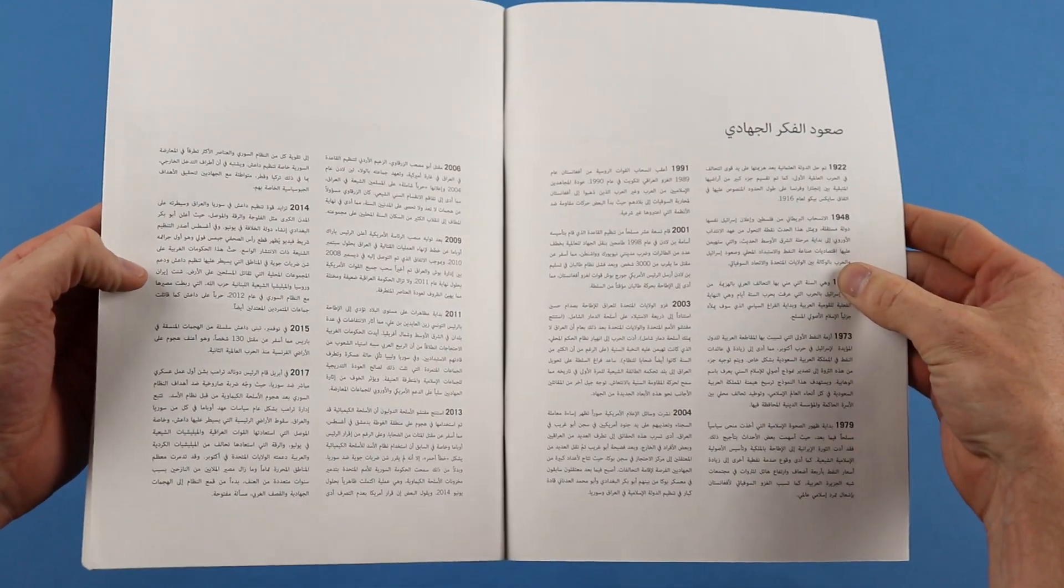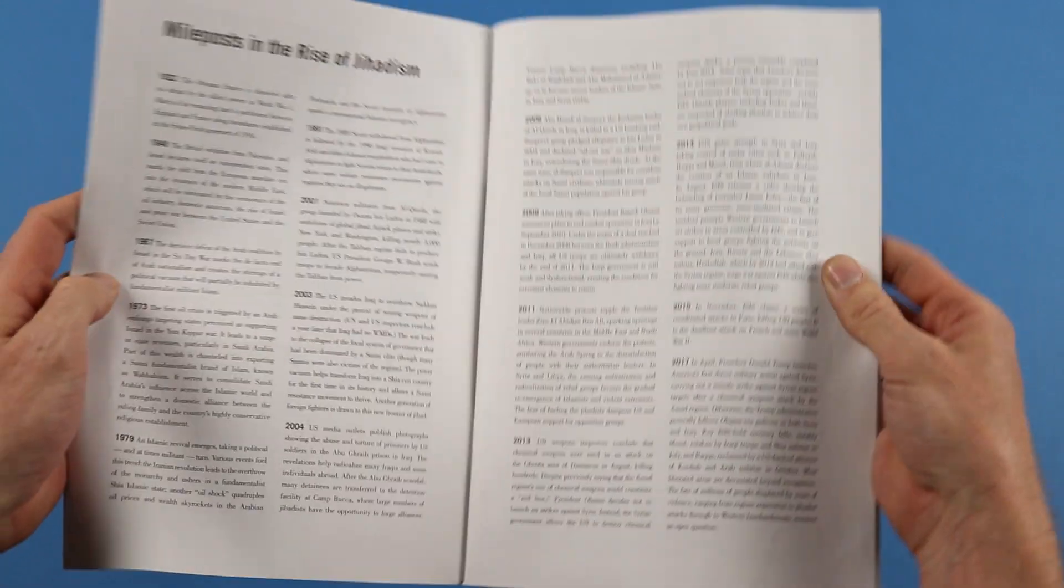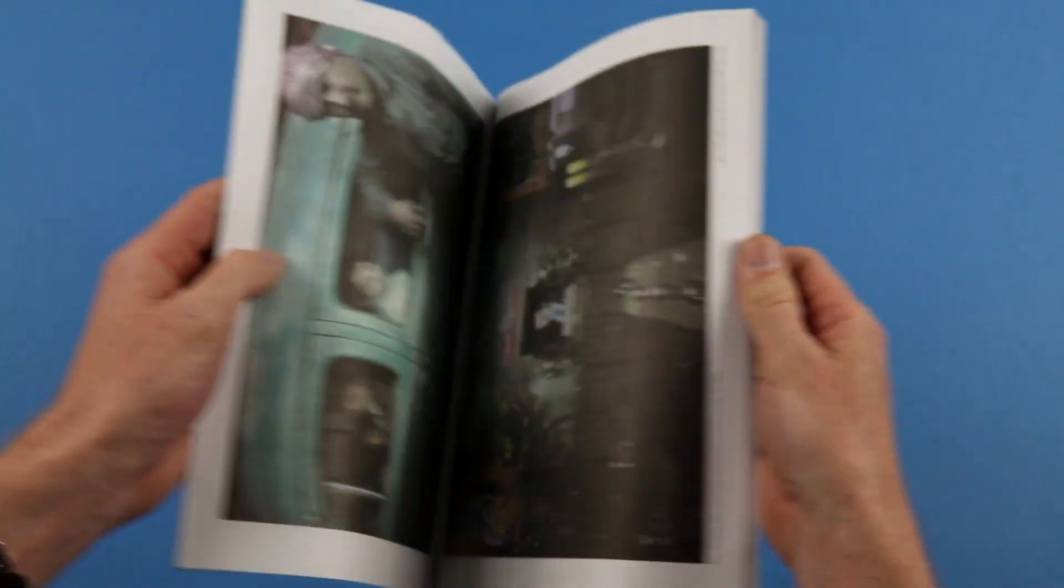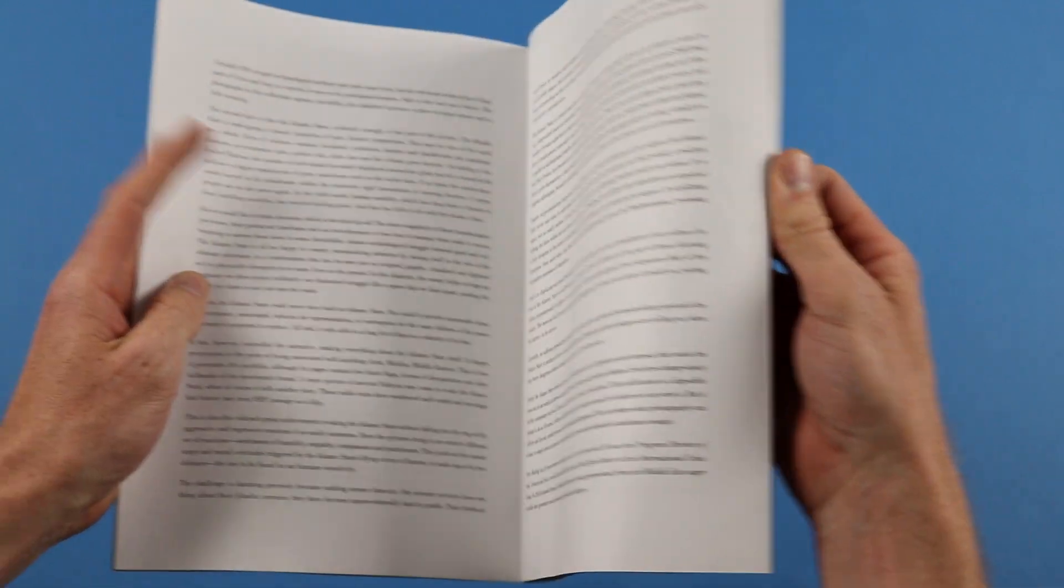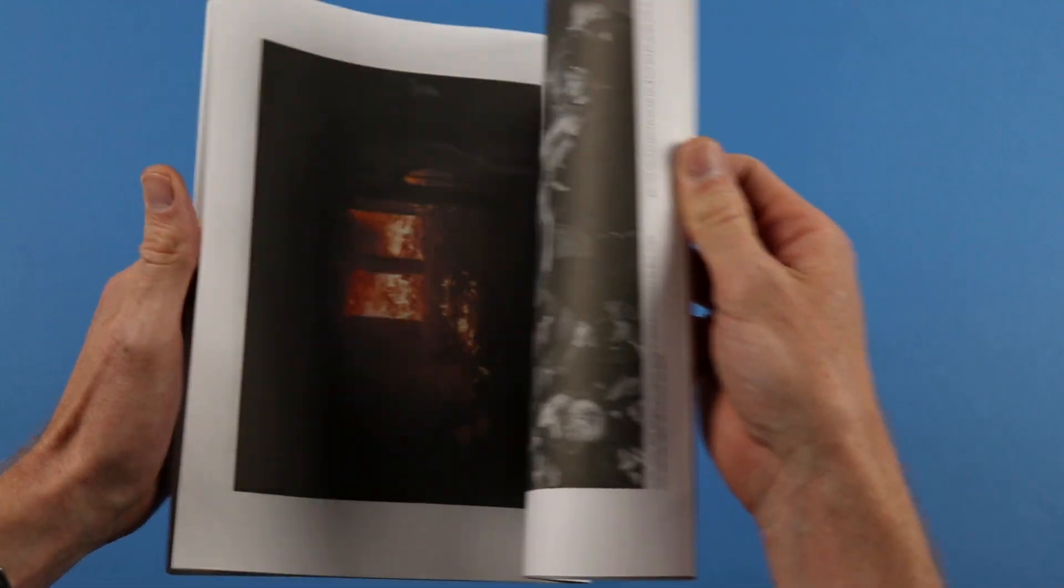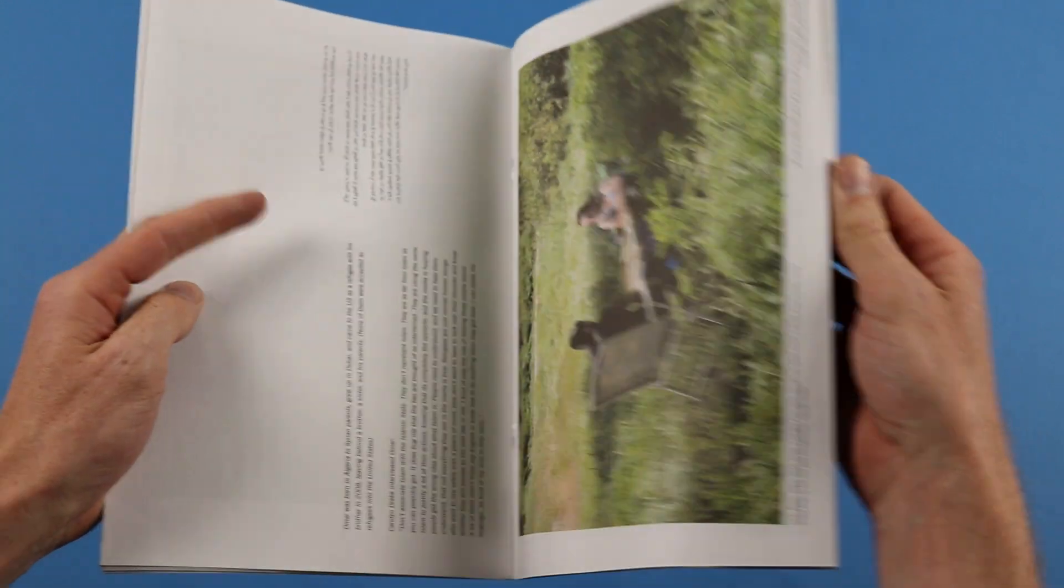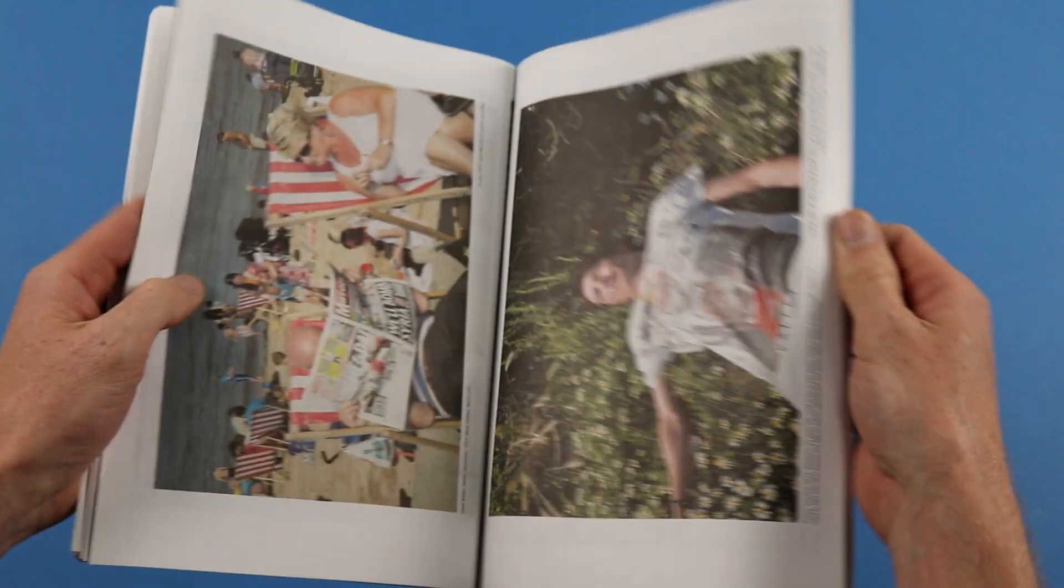And so here you have the timeline in Arabic, and here you have a timeline in English. Just such a simple and balanced way to present the two languages alongside each other, and rather than fighting or conflicting with each other, actually the whole thing is balanced to make sure that they make sense alongside each other.